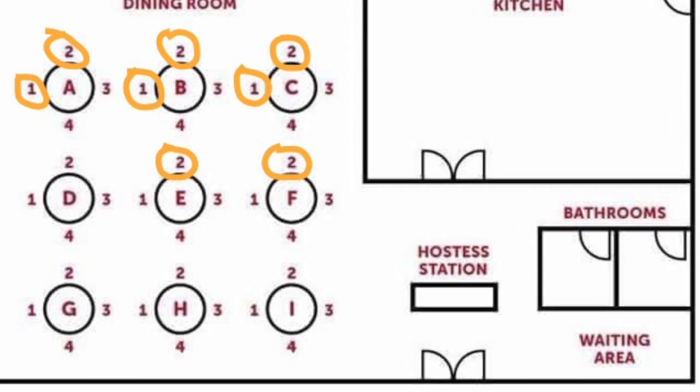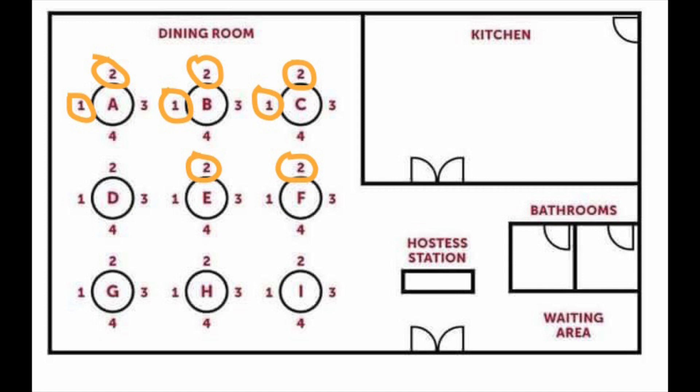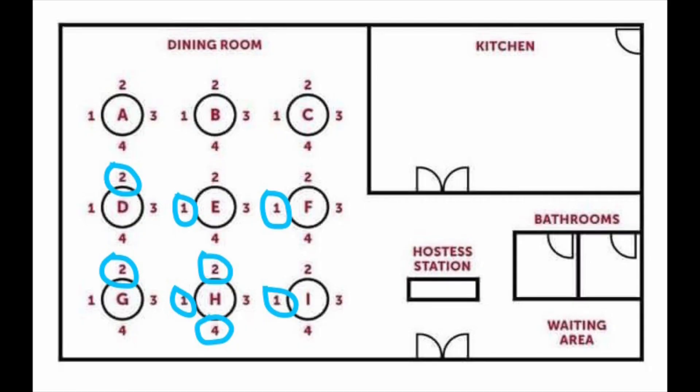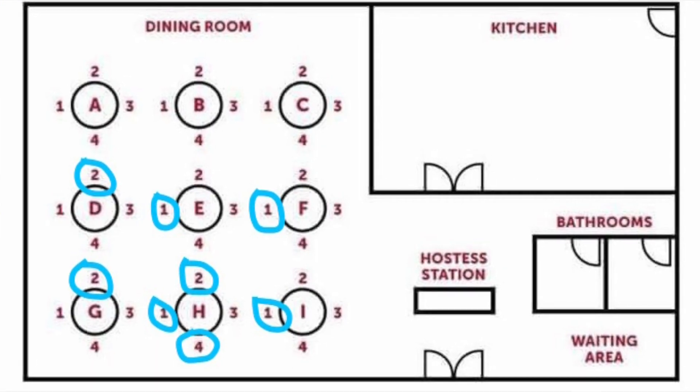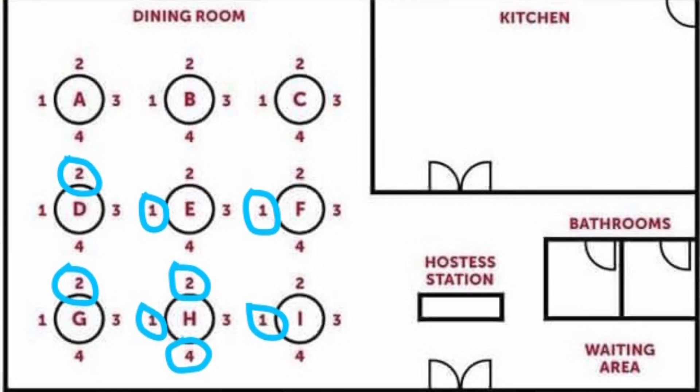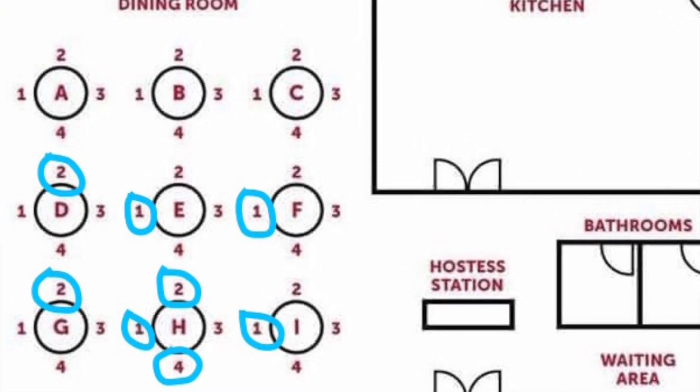If you absolutely had to sit at one of those tables, here are the chairs you want to pick. Tables A, B, and C chairs one or two give you the most you can see from that portion of the room. It's not ideal, but if you had to sit there — because you don't want to make a big deal, you've got the kids with you — pick one of those. For tables D, E, or F: D seat number two, E number one, and F number one. Those give you the most for where you're at — you can see the most stuff. The issue is you're kind of in the center of the room, so your back is still to a lot of things.